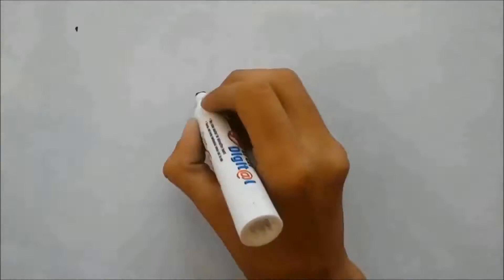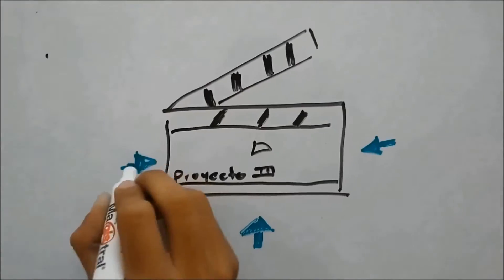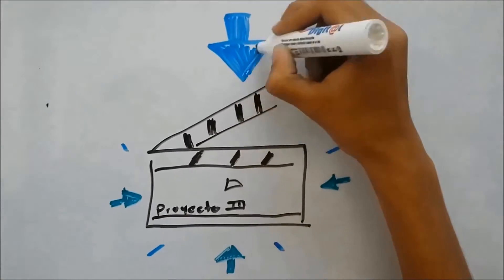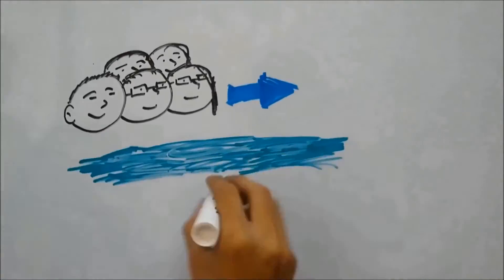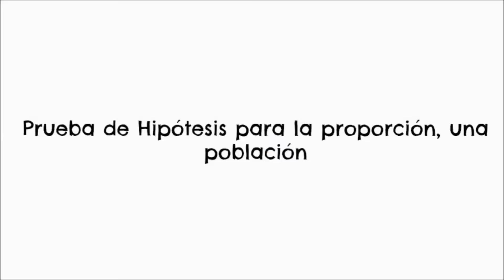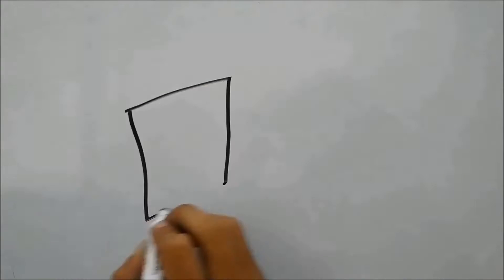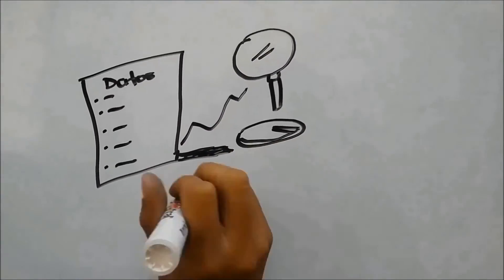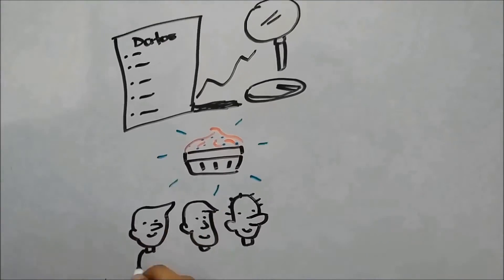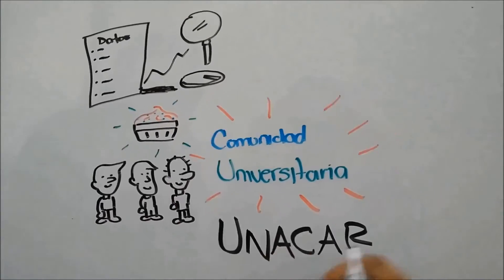Introducción. Este video es el proyecto final del curso de estadística aplicada a las empresas 2, tercera secuencia. El equipo número 1 del grupo verde de este curso desarrollará el tema de prueba de hipótesis para la proporción de una población. Los datos que se manejan en el problema son reales, obtenidos de un estudio estadístico descriptivo del mercado de cupcakes de la comunidad universitaria de la UNACAR Campus 1.